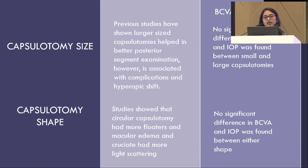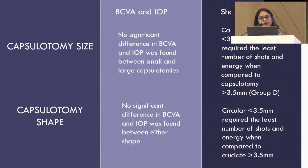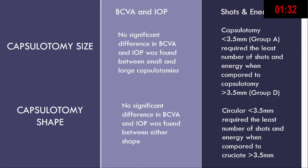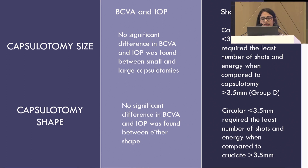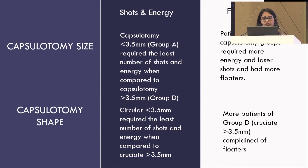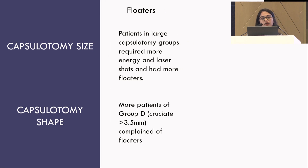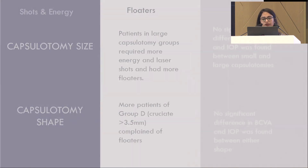Previous studies have shown that a large capsulotomy helped in better posterior segment examination; however, it was associated with complications and hyperopic shift. In terms of capsulotomy shape, studies have shown that the circular shape had more floaters and macular edema compared to cruciate, with more light scattering. In our study, we did not find any significant difference between BCVA and IOP in either the different types of capsulotomy sizes or shapes. However, in terms of shots and energy, the size less than 3.5 mm fared much better and required fewer shots and energy. In terms of floaters, the larger the capsulotomy size, the more incidence of floaters was noted, and the cruciate shape was associated with more floaters.